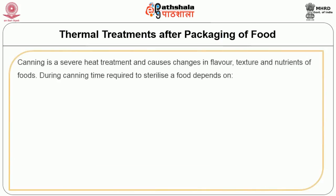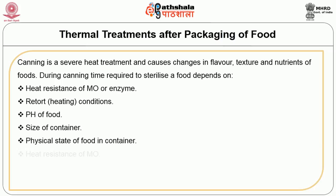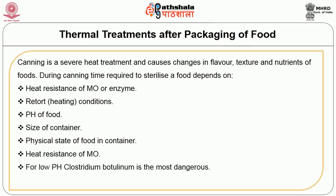Canning is a severe heat treatment which causes changes in flavour, texture, and nutrients of foods. During canning, the time required to sterilize a food depends on the heat resistance of microorganisms or enzymes, retorting conditions, pH of the food, size of the container, and heat resistance of microorganisms. For low-pH foods, Clostridium botulinum is the most dangerous organism; under anaerobic conditions it can produce an exotoxin.